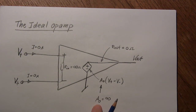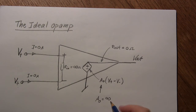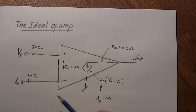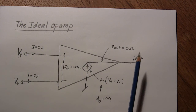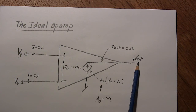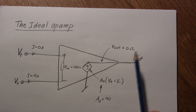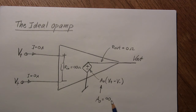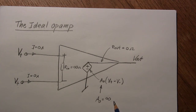The raw gain — or open loop voltage gain — has units of times (×), because the input and output are both voltages, and voltage over voltage is dimensionless.